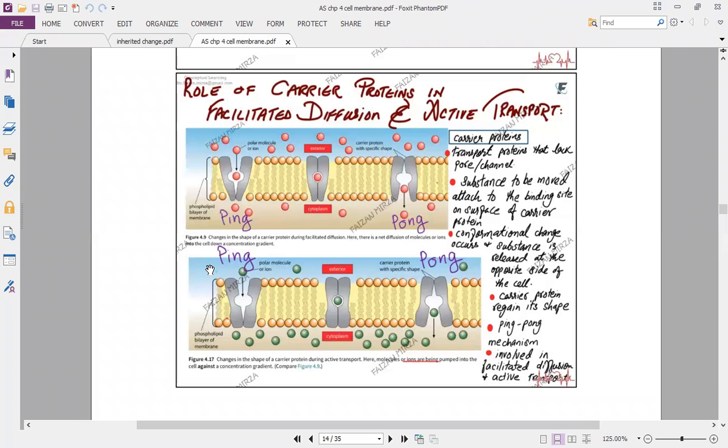In this way, it moves the substance from outside to inside or inside to outside, depending whether it's facilitated diffusion or active transport, and in which direction the substance needs to move. For example, if it's facilitated diffusion, the molecule moving by carrier transport following the ping pong mechanism will move down the concentration gradient. But if it's active transport, then the same ping pong mechanism will be occurring against the concentration gradient, and ATP energy, which is coming from the breakdown of ATP, will be required.